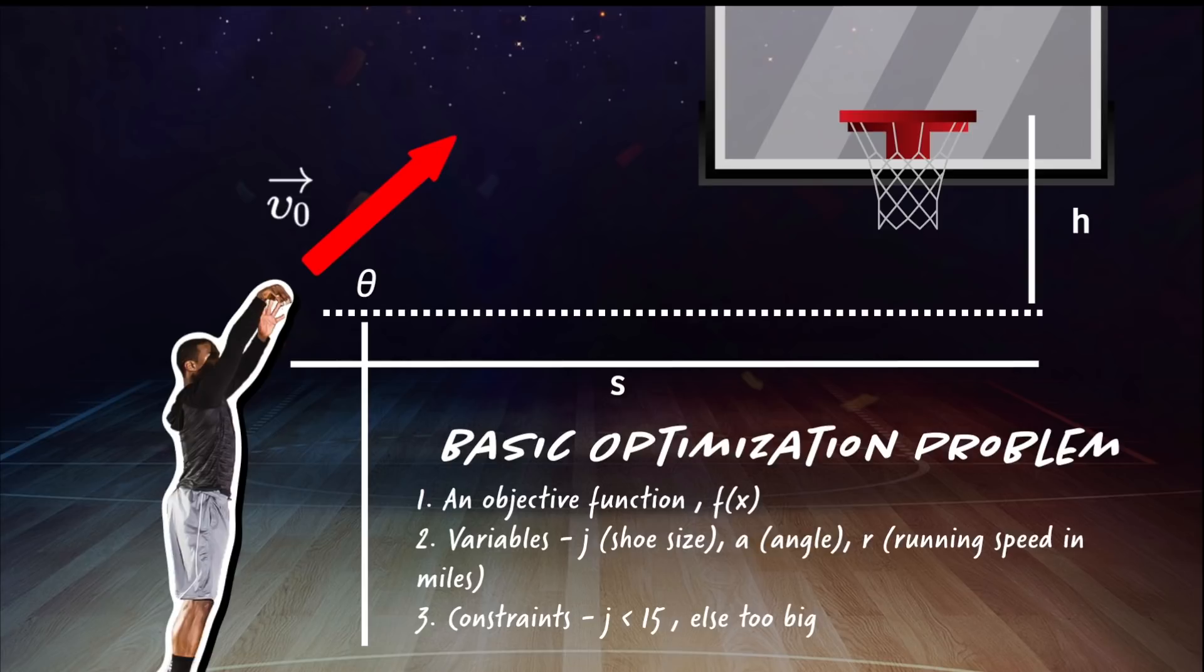In the case of our basketball player, if his main goal is to maximize his number of free throws, that becomes his objective function. He can choose to spend his time doing any number of things like running or jump exercises to help achieve that goal. These are variables. And there are certain limits to the total amount of training time he has. For example, he can't run for more than say 30 minutes each day due to schedule conflicts, aka Fortnite is too much fun. These are constraints.